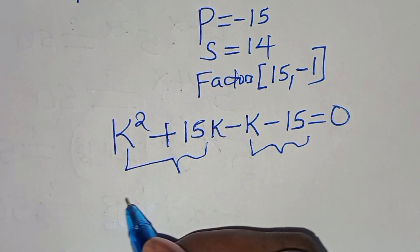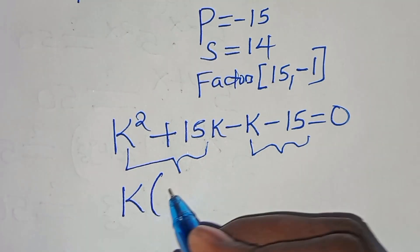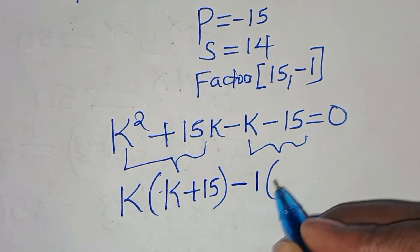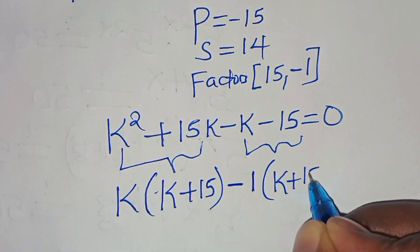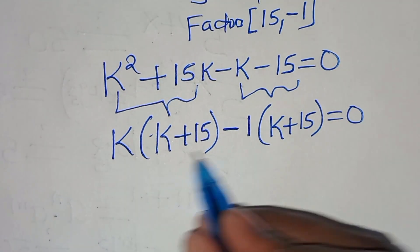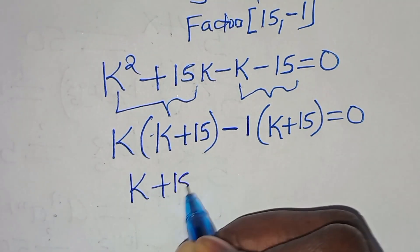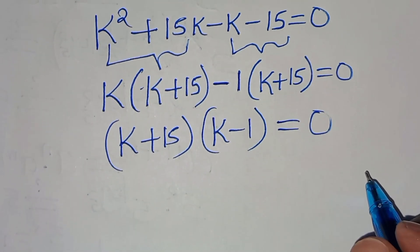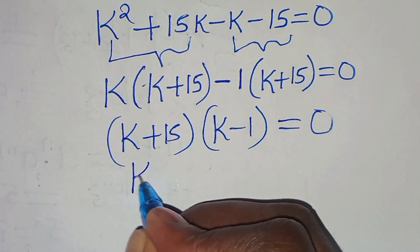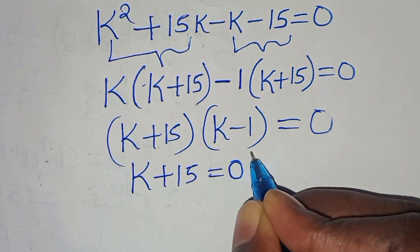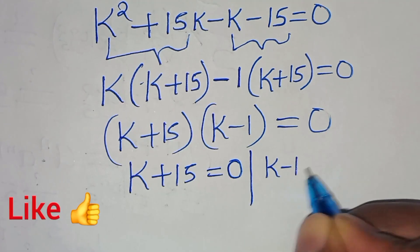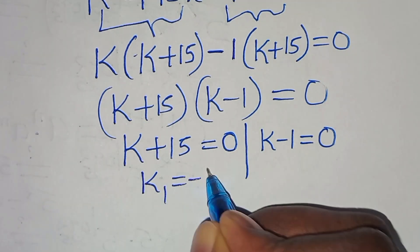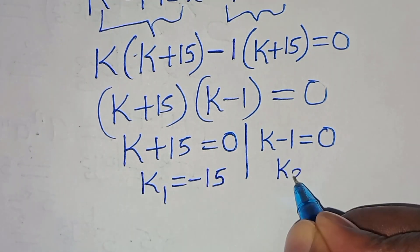From the first part, k is common, so we factor out k to get k(k + 15). Then -1 is common in the second part, giving -1(k + 15). So (k + 15)(k - 1) = 0. This gives us k + 15 = 0, so k₁ = -15, and k - 1 = 0, so k₂ = 1.